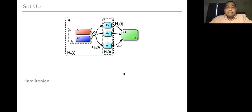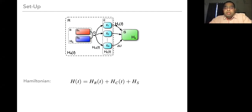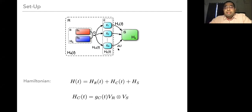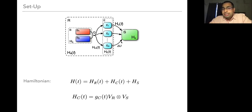Slowly we'll go deeper. The total Hamiltonian has three parts: the work resources, the coupling between the work resources and the system, and then the system itself. The system coupling I'm going to take is of a factorized form — some operator from the work resource side and some operator from the system side. I'm going to couple just the engines and not the heat baths with the system.